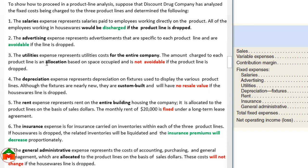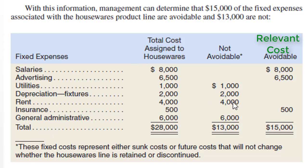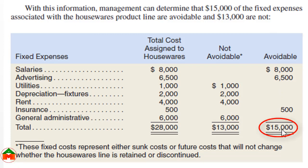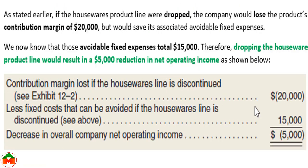Only three expenses are relevant for this differential analysis: salaries, advertising, and insurance. Here is the summary: salaries — avoidable/relevant; advertising — avoidable/relevant; utilities — cannot be avoided/irrelevant; depreciation — cannot be avoided/irrelevant; rent — cannot be avoided/irrelevant; insurance — can be avoided/relevant; general administrative — cannot be avoided/irrelevant. So the relevant costs are salaries $8,000, advertising $6,500, and insurance $500, totaling $15,000 in relevant cost, while $13,000 represents unavoidable costs.